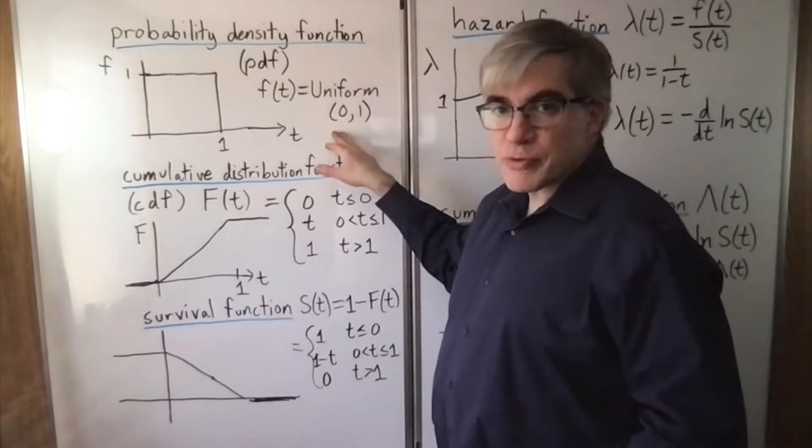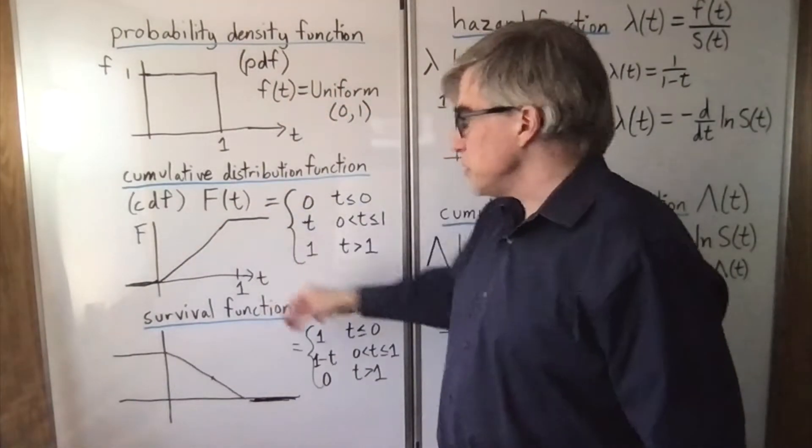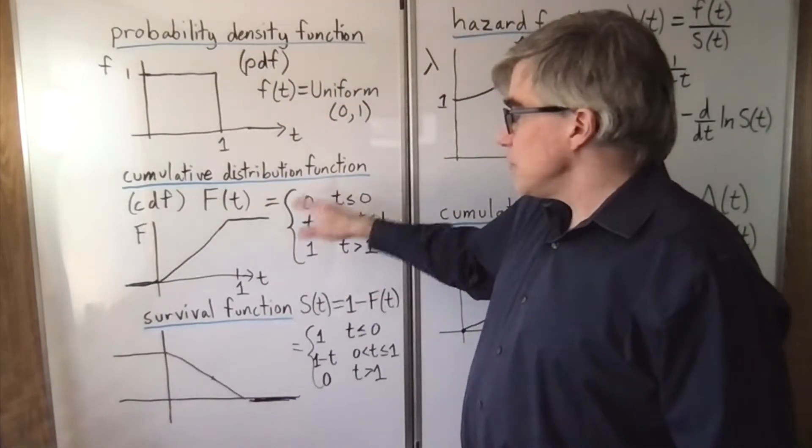Let's take the uniform distribution from 0 to 1 as our PDF. If you integrate that, you get the CDF, the cumulative. This is the probability that the event has happened.